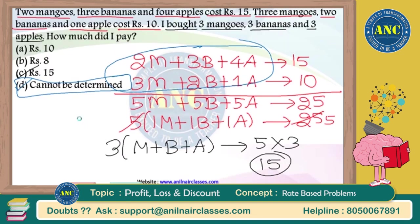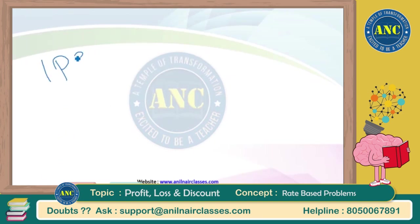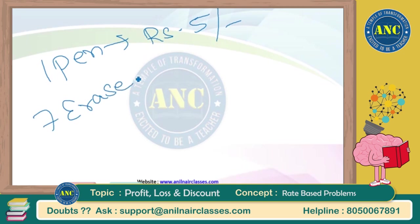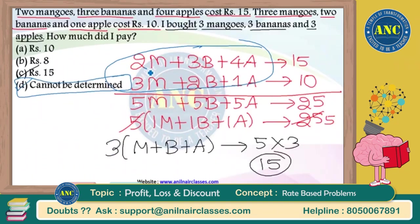Suppose I ask you: one pen will cost 5 rupees — 7 erasers will cost how many rupees? Can you answer this question? Definitely you cannot, because I am giving you information about a pen and asking about an eraser. Similarly, when the coefficients refer to different items, the answer cannot be determined — and that option will definitely be given in such cases.